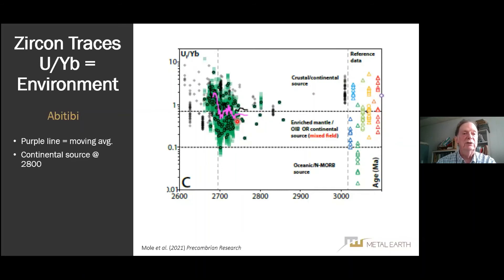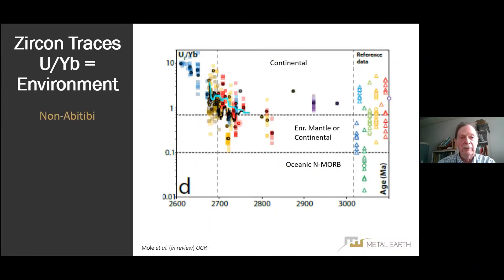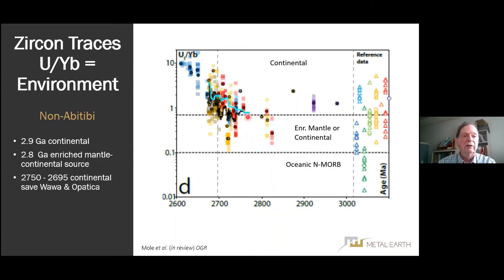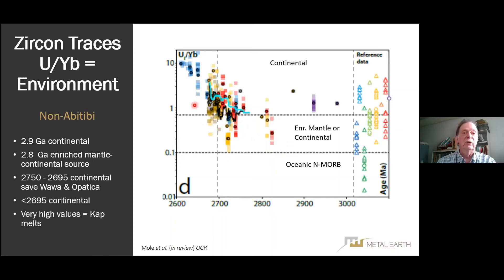The purple line is the moving average. At 2.8 Ga we talk in terms of a broadly continental source that becomes more crustal with time. For the non-Abitibi data, at 2.9 Ga it is continental; at 2.8 Ga there is a mix of mantle and continental sources. During the volcanism of the Abitibi from 2.75 to 2695 Ma, everything is continental except Wawa and Opatica. After 2695 Ma, everything is continental — with very high numbers for the Kapuskasing Structural Zone melts.